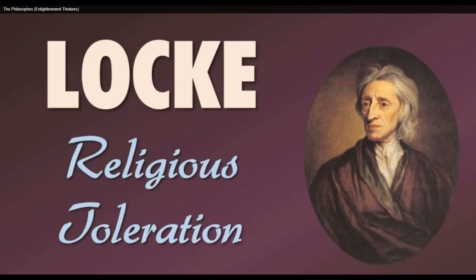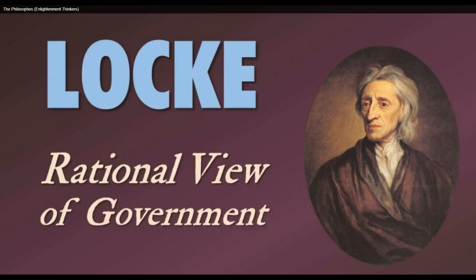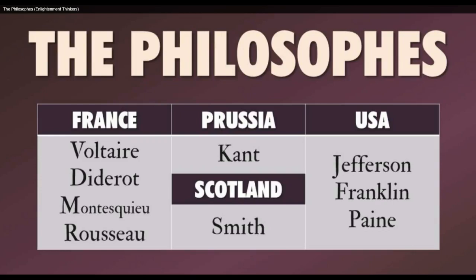Locke was in favor of religious toleration — look at your list: reason, science, liberty, toleration. That's going to ring with the philosophes of the time. A rational view of government means: if the government is not serving you, you need to reform it. Your early philosophes — Voltaire, Diderot, Montesquieu, Rousseau — are all French philosophes. Then we have the Prussian philosophe Kant, the Scottish Adam Smith, and the American philosophers Jefferson, Franklin, and Paine.